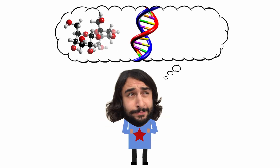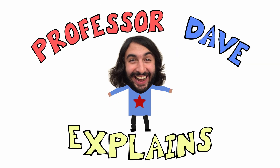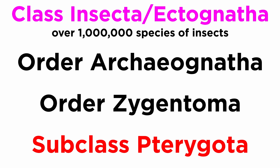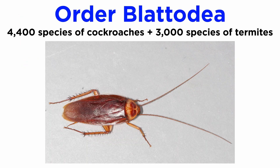Professor Dave Explains. We are working our way through the many orders within subclass Pterygota, which is part of class Insecta within subphylum Hexapoda. The order Blattodea is closely related to Mantodea. Order Blattodea includes about 4,400 described species of cockroaches and over 3,000 species of termites.